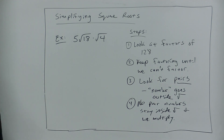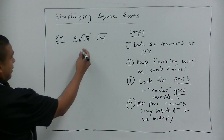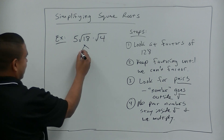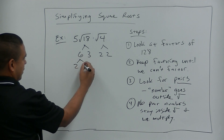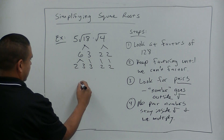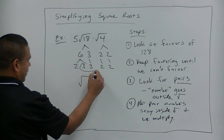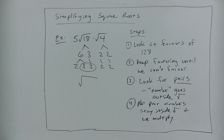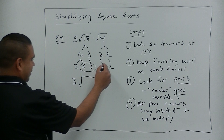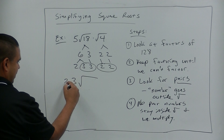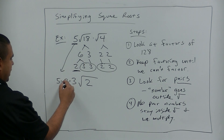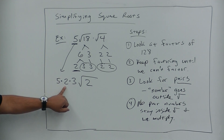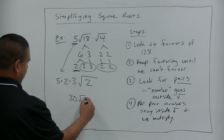Alright, it's been about 90 seconds, so hopefully you've made some progress. It's okay if you didn't get the answer — let's go through it together. 18 breaks down to 6 and 3. What about the 4? 2 and 2. The 6 becomes 2 and 3. Any pairs? We have a pair of 3s — that goes outside. Any other pairs? A pair of 2s — the number 2 goes outside. Anything left over stays inside. We had a 5 out in front. So 5 times 2 is 10, times 3 is 30. We get 30 square root of 2.